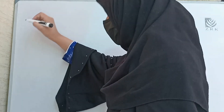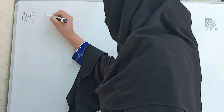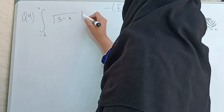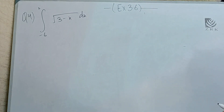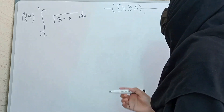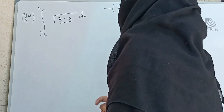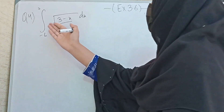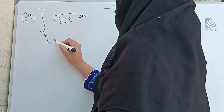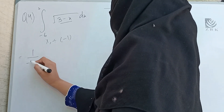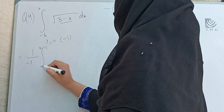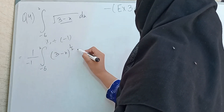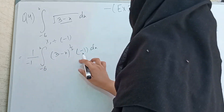The next question is Question 4: integral from minus 6 to 2 of √(3 − x) dx. We have √(3 − x), so we write it as (3 − x)^(1/2). The derivative of 3 is 0 and derivative of x is minus 1, so we multiply and divide by minus 1 to adjust.